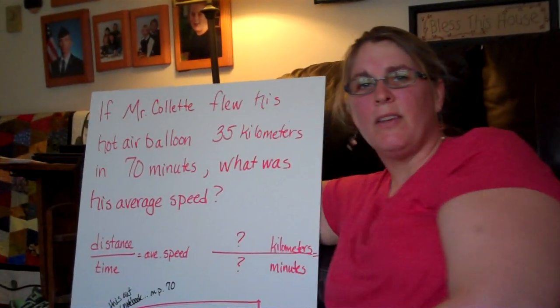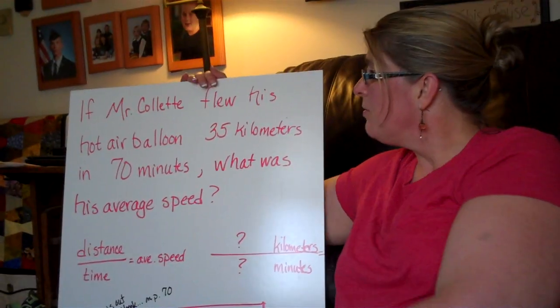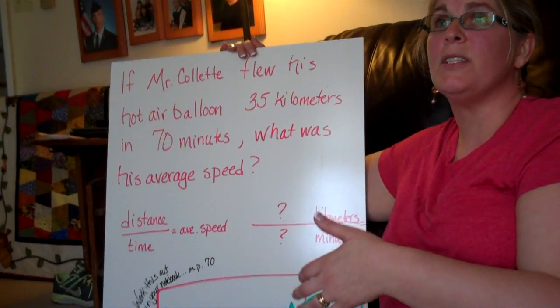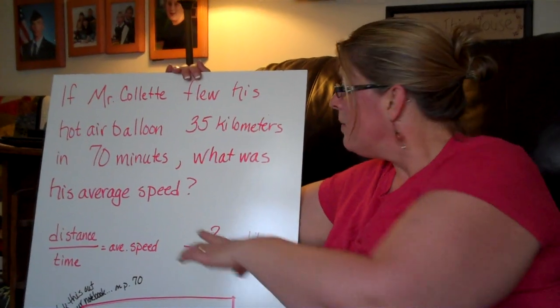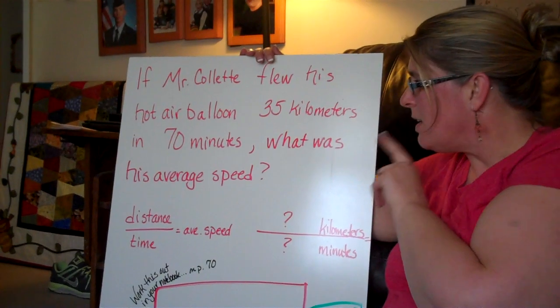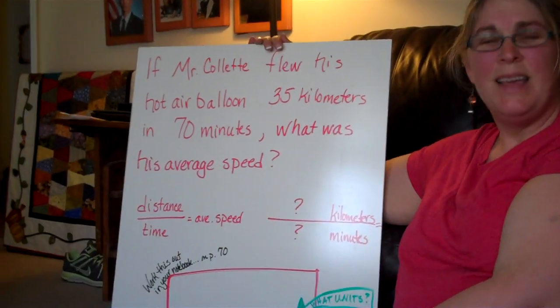I have one here that I would like you to calculate for me. If Mr. Collette flew his hot air balloon, and in my mind that hot air balloon is pink and has a unicorn on it, if he flew that hot air balloon 35 kilometers in 70 minutes, what was his average speed?